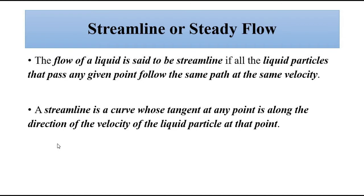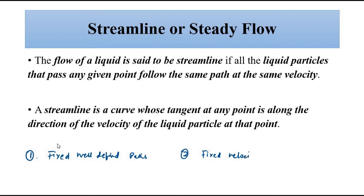Streamline flow or steady flow has two important characteristics. The first characteristic is that it follows fixed, well-defined paths. The second is fixed velocity at each point. Please pay attention to the second point — I have not said fixed velocity throughout; at each point the velocity is fixed.